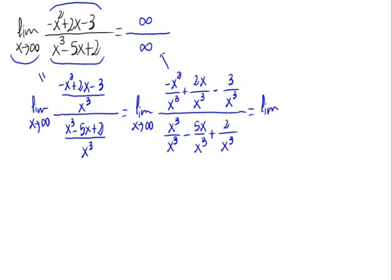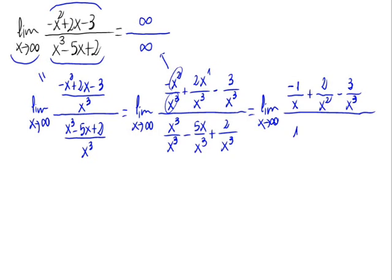Simplifying every fraction: x squared divided by x cubed — the x squared and part of the cube cancel — so we have minus 1 divided by x. Then 2x divided by x cubed equals 2 divided by x squared. And minus 3 divided by x cubed stays as is. On the denominator: x cubed divided by x cubed is 1, minus 5x divided by x cubed is 5 divided by x squared, plus 2 divided by x cubed.